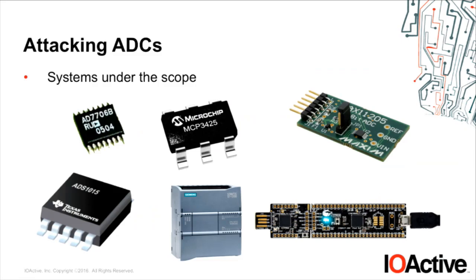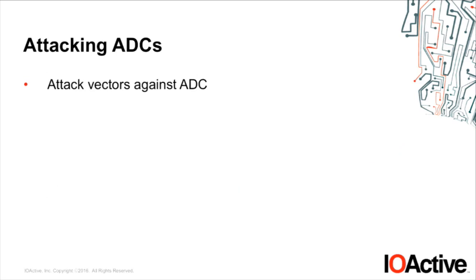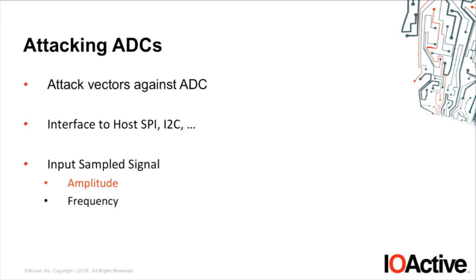In this talk, we analyzed six different devices — all Sigma Delta ADCs, except for one real PLC where we don't know what is inside because there is no documentation on it. We want to attack from two ways, purely from the analog world: we are going to attack through amplitude and frequency. We are going to start with the amplitude side.